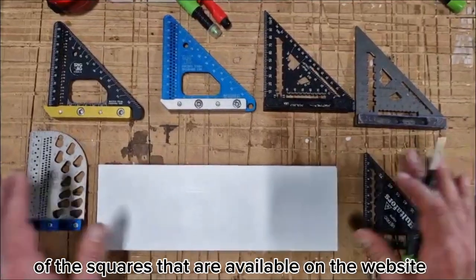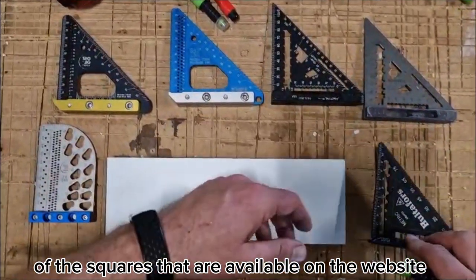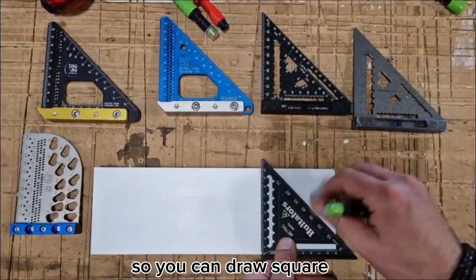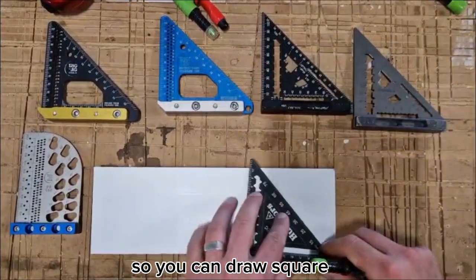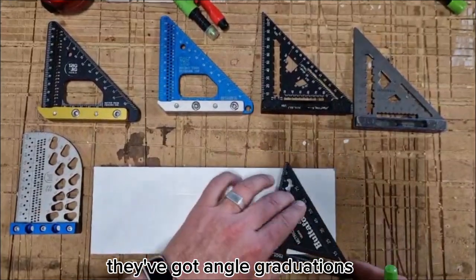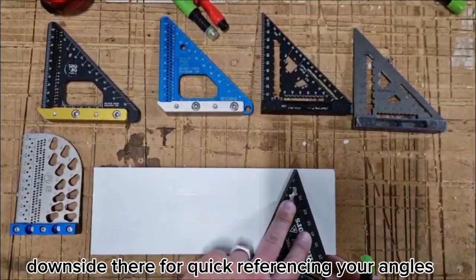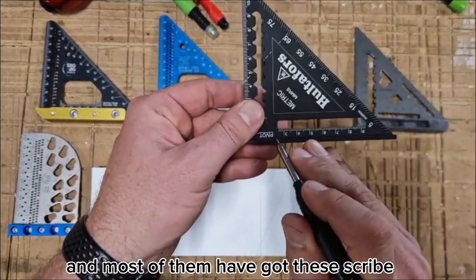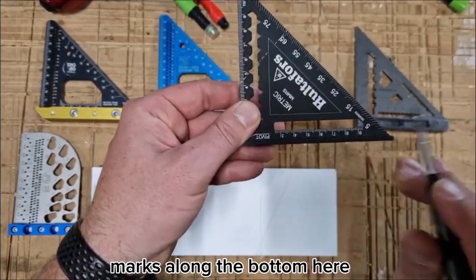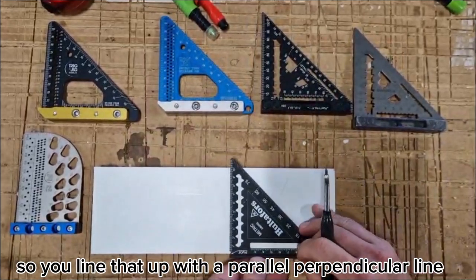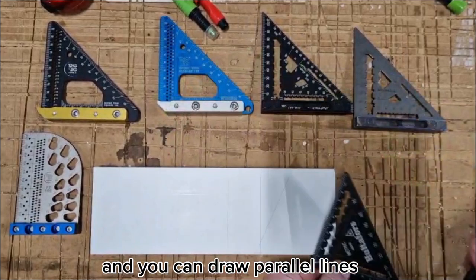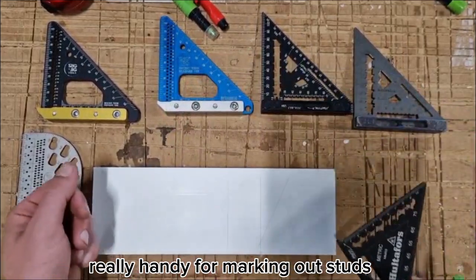I'm going to give you a run-through of the squares available on the website. All of these squares share the same standard features so you can draw square. They've got angle graduations down the side for quick referencing your angles, and most have scribed marks along the bottom so you can line that up with a parallel perpendicular line and draw parallel lines, really handy for marking out studs.